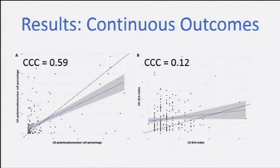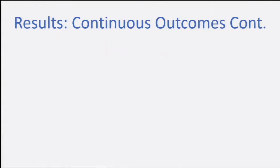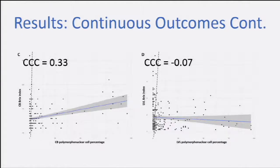When we did the concordance correlation coefficient analysis using Bland-Altman regression graphs, we saw that the correlation between polymorphonuclear cells in the cytobrush and lavage was moderate to good. But when we compared the Brix index of both techniques, it was poor. Also, the association between the number of polymorphonuclear cells and the Brix index was very poor. So the Brix index is probably not a good technique to diagnose subclinical endometritis at the cow side.